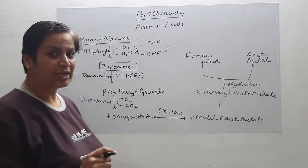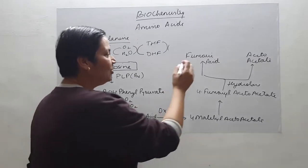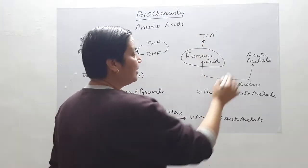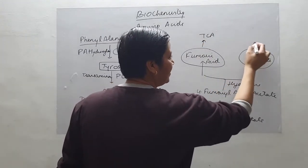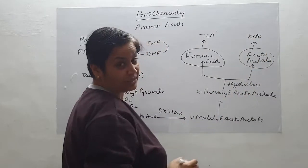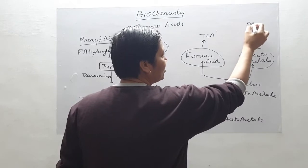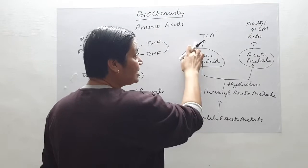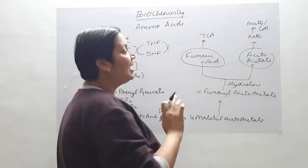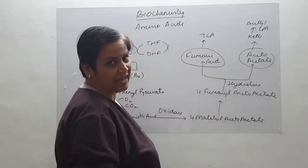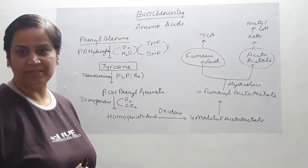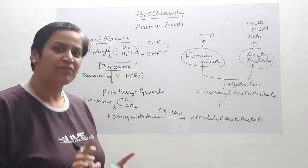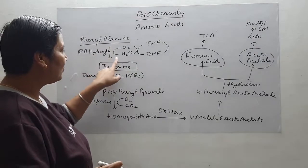You can see fumaric acid is formed, and acetoacetate, which is a keto group — acetoacetate can also be converted into acetyl-CoA. That is why in the beginning I told you phenylalanine is glucogenic as it gives fumaric acid, and it is ketogenic as well. This concludes the first segment discussing the catabolism of phenylalanine.